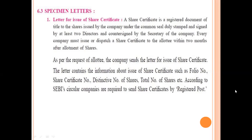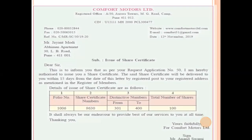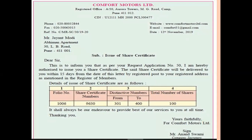I hope the introduction is clear. We can now move forward with the format of the letter. As I told you yesterday, you have to write and practice each letter two to three times so that you can score full marks in your exams. The format of the letter was already studied last year. The first part is the name of the company. As you can see, the name of the company is Comfort Motors Limited, with the registered address at A-30, Aurora Towers, MG Road, Camp, Pune 411012.